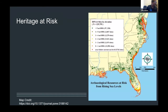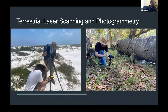This represents quite a dire problem for archaeologists. At the current rate, there are over 13,000 archaeological sites in the southeast alone that will be at risk, as they are currently zero to one meters above mean sea level. One thing we can do, as we've been talking about all day, is document. As discussed in several presentations before me, the ways we've been doing that so far has been with terrestrial laser scanning and photogrammetry.